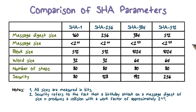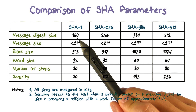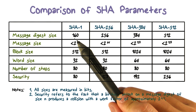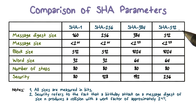This table compares the SHA parameters. The message digest size refers to the length of the hash value. So for SHA1, it is 160 bits, and for SHA512, the hash length is 512 bits.